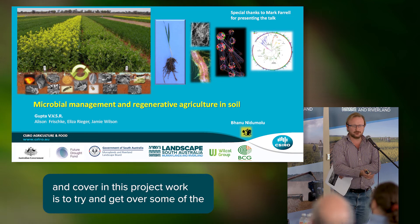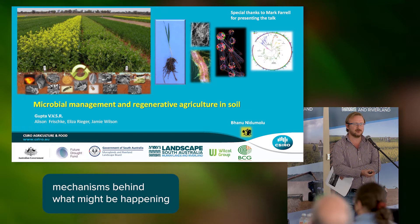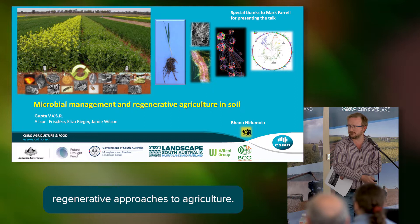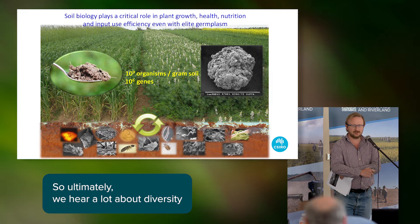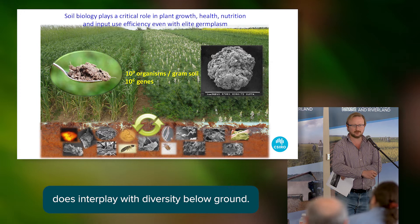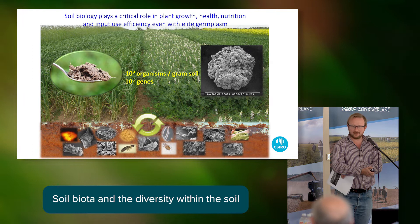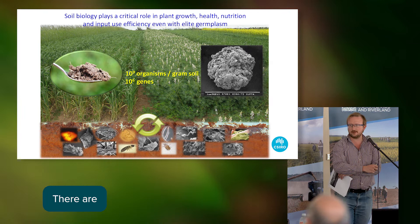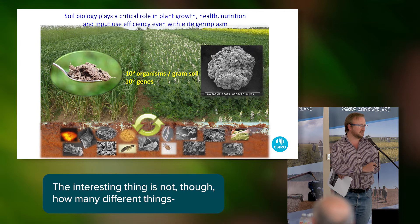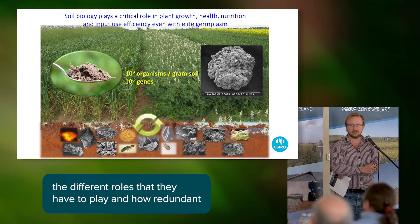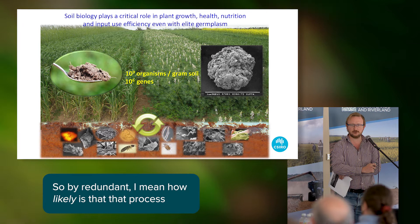What Gupta wants to cover in this project is to get over some of the mechanisms behind what might be happening with practices put in place through regenerative approaches to agriculture, and how they may play out in our drier systems. We hear a lot about diversity, and diversity above ground does interplay with diversity below ground - soil biota. The diversity within the soil is huge: somewhere between a hundred million and a billion microbes per gram of soil. What's interesting is not how many individual species are there, but more interestingly the different roles they have to play and how redundant some of those roles are across the microbial community.